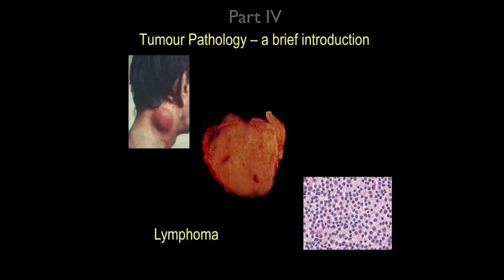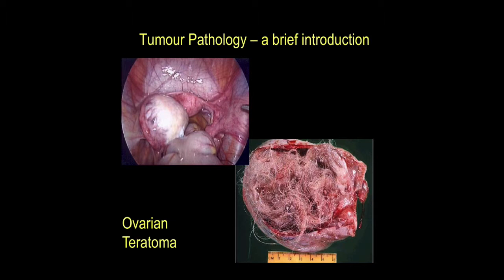We've now moved forward from having thought about epithelial and connective tissue type neoplasms to some of the others. Here's a lymph node — astonishingly large — and this is a lymph node taken out. These pictures illustrate the general principle that tumors may be derived from lymphoid cells. We have the whole gamut of Hodgkin's lymphomas versus non-Hodgkin's lymphomas, tumor grading and staging, and so on — a very specialized area.